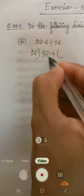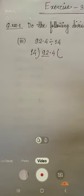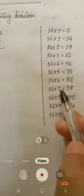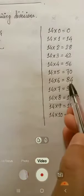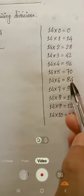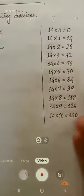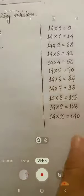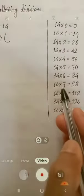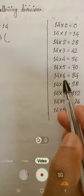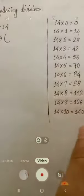Now if you see the table of 14, 6 times 14 is 84, which is the nearest smaller number than 92. 7 times 14 is 98, which is greater than 92, so we cannot divide 7 times by 14. So 6 times 14 is 84, which is the nearest smaller number of 92, so we should divide 6 times.